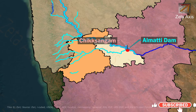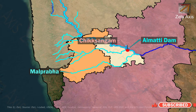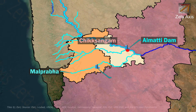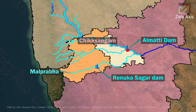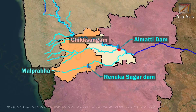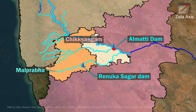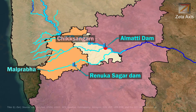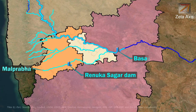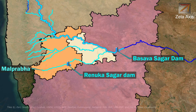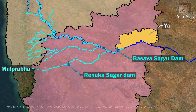Within Bagalkot district, the Malprava River also joins the Krishna River. The Malprava River originates in the Western Ghats in Belgavi district, and Renuka Sagar Dam is constructed on it in Belgavi district. The Malprava River then flows further to join the Krishna River in Bagalkot district. Basava Sagar Dam, previously known as Narayanpura Dam, is a dam constructed across the Krishna River at Yadgir district of Karnataka.